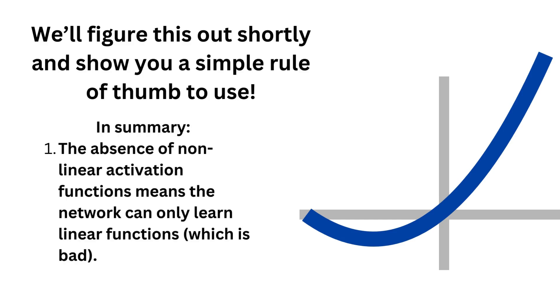In summary, the absence of non-linear activation functions means the network can only learn linear functions, which is pretty bad. Relu or its variants are usually good enough when you have to choose an activation function.